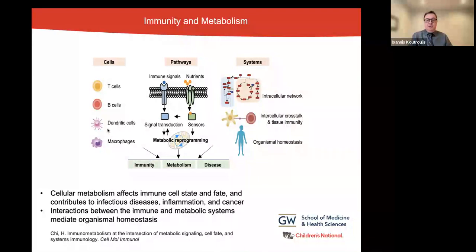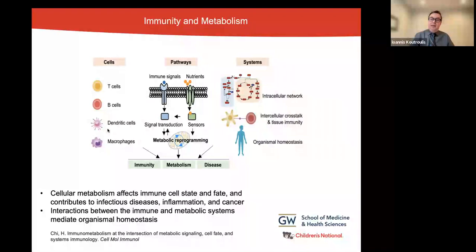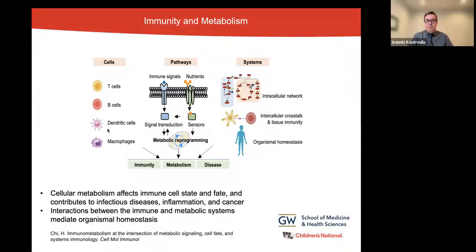Similarly, the immune system is very heterogeneous — a lot of cell types, subsets, and activation states, and context-specific interactions with the environment and other cells in the body. Therefore, having an integrated view is very important to understand the metabolic control of cellular, tissue, and organismal homeostasis by driving into the intracellular metabolic network, the interaction between cells, the interaction between immune and metabolic tissues, and the interplay between immune cells and diet.